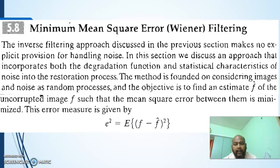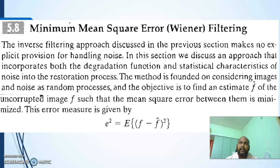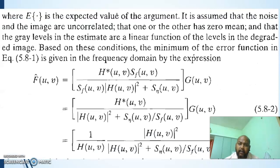This helps to find out the error between the original image and the restored image, which can be calculated using the expression: e² = (F - f̂)², that is the original image minus the restored image, whole squared. If any difference exists between the original image and the restored image, it can be found through this error equation, which helps to control the coefficients of the filter.